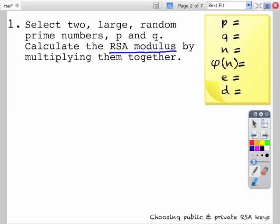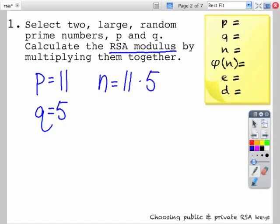So I'm going to pick for p the number 11 and for q I'm going to pick 5. Once again I'm picking numbers that are very small for the example. So my RSA modulus or n is going to be 11 times 5 and that is equal to 55.